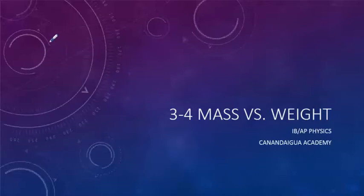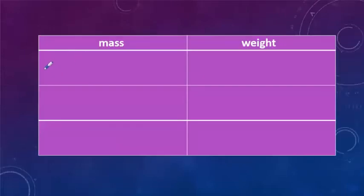Today we're going to be talking about the differences between mass and weight. So let's just jump right into it and define the two. Mass is defined as the amount of matter, whereas weight is defined as a force of gravity.